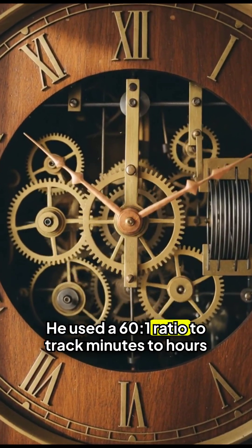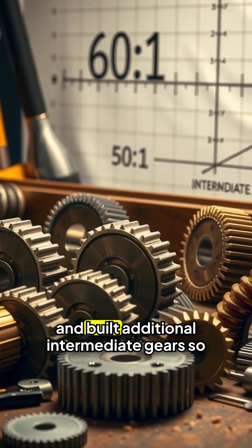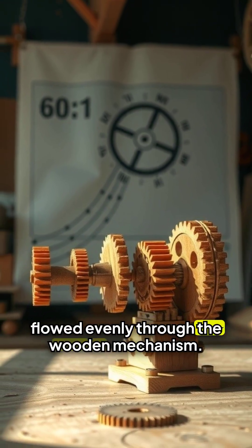He used a 60.1 ratio to track minutes to hours and built additional intermediate gears so torque flowed evenly through the wooden mechanism.